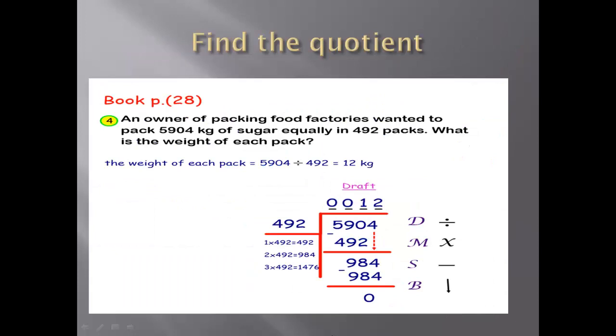Find the quotient. We have in the school book page 28. An owner of packing food factories wanted to pack 5,904 kg of sugar equally in 492 bags. What is the weight of each bag? We need to divide with the same steps of division.